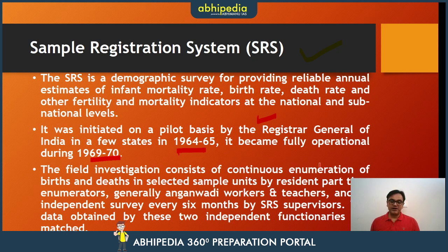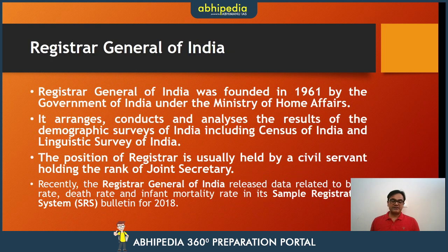The field investigation consists of continuous enumeration of births and deaths in selected sample units by resident part-time enumerators — Anganwadi workers or teachers — and an independent survey every six months by SRS supervisors. The Registrar General of India office was founded in 1961 by the Government of India under the Ministry of Home Affairs.